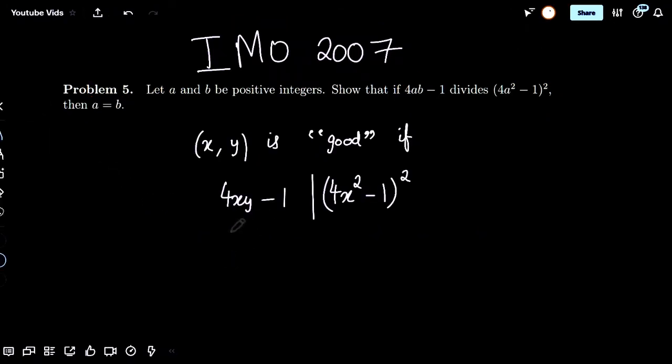Now, what do we know about this relation? Well, 4xy minus 1 being a factor of 4x squared minus 1 whole squared means that there exists a k such that k times 4xy minus 1 equals 4x squared minus 1 whole squared.